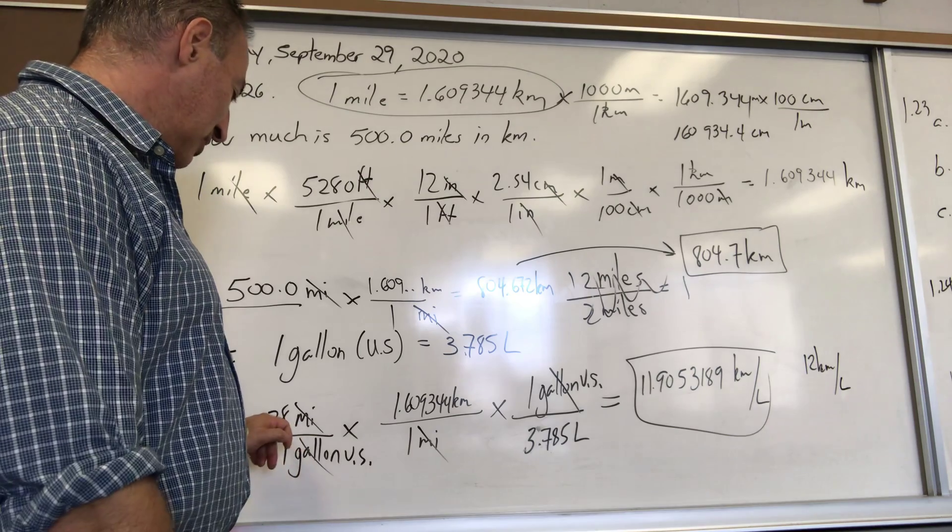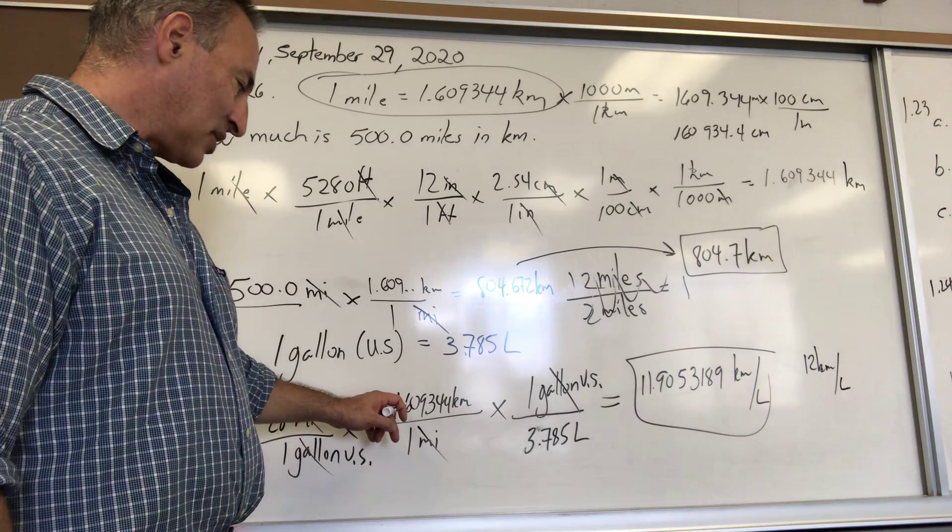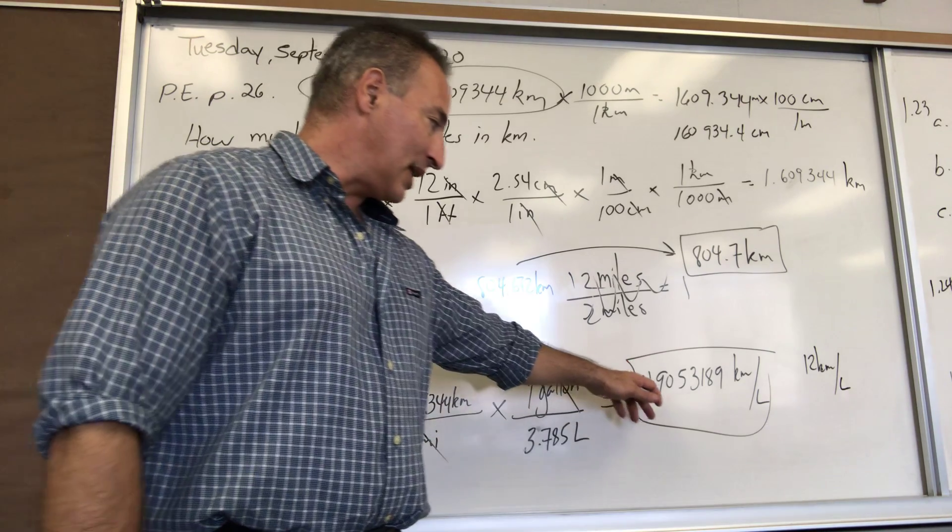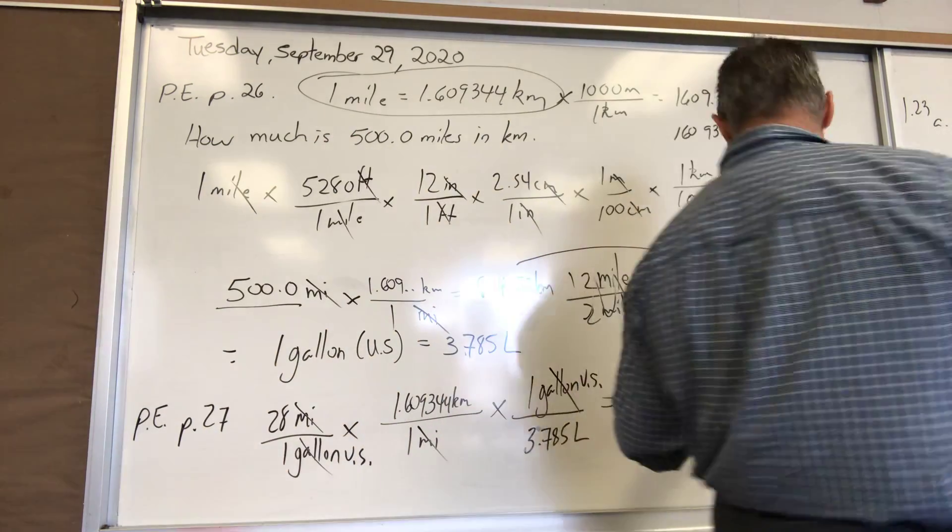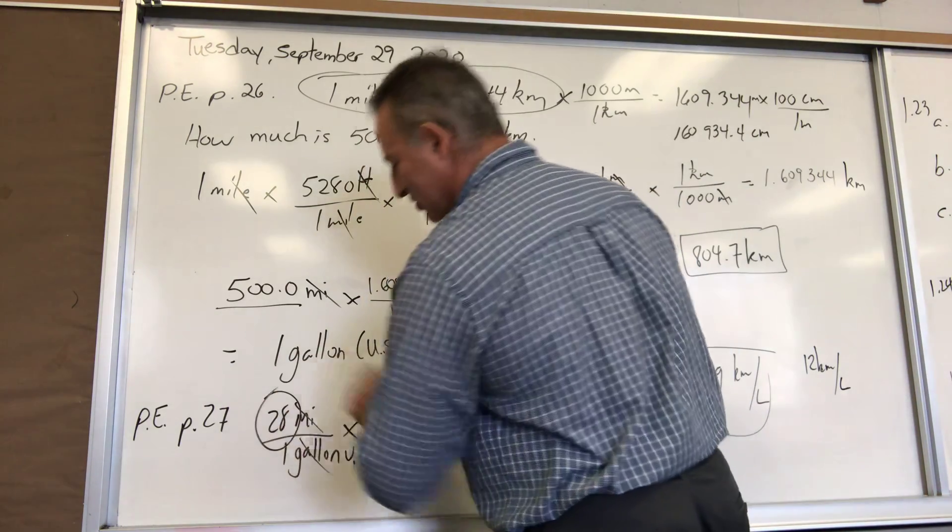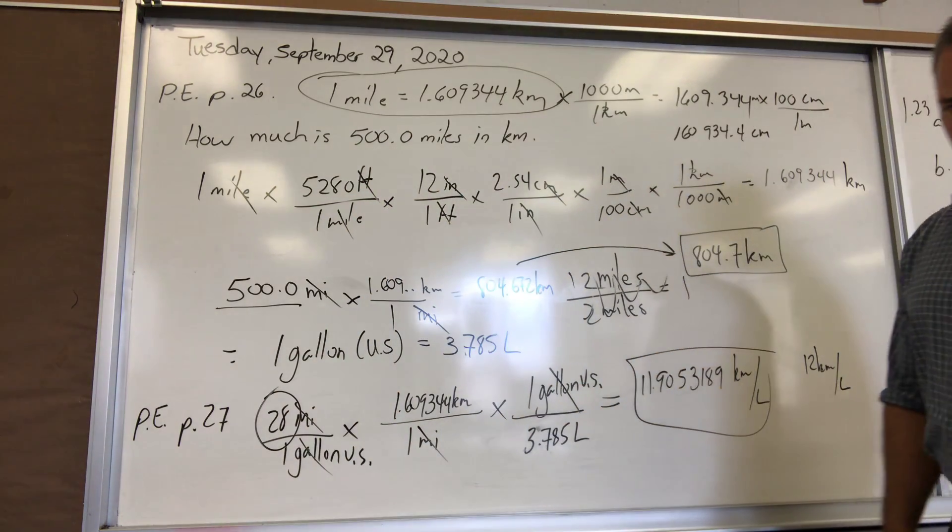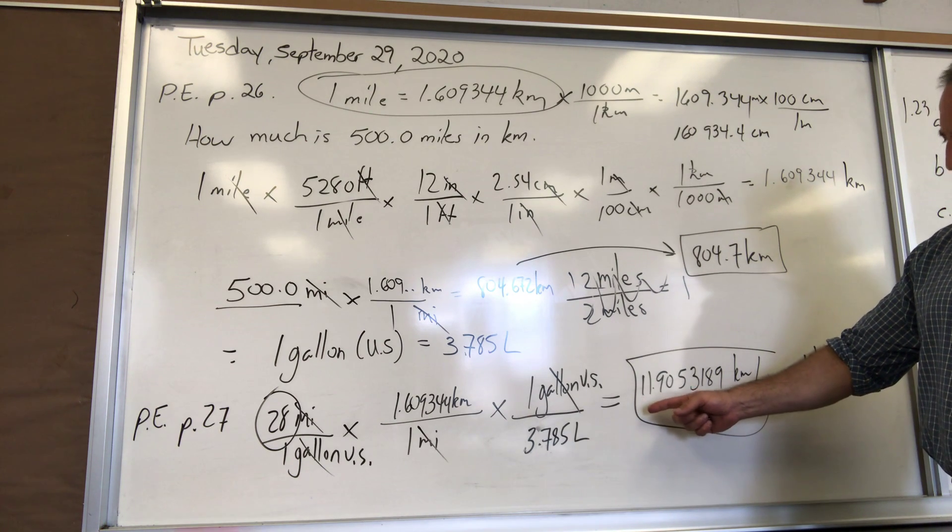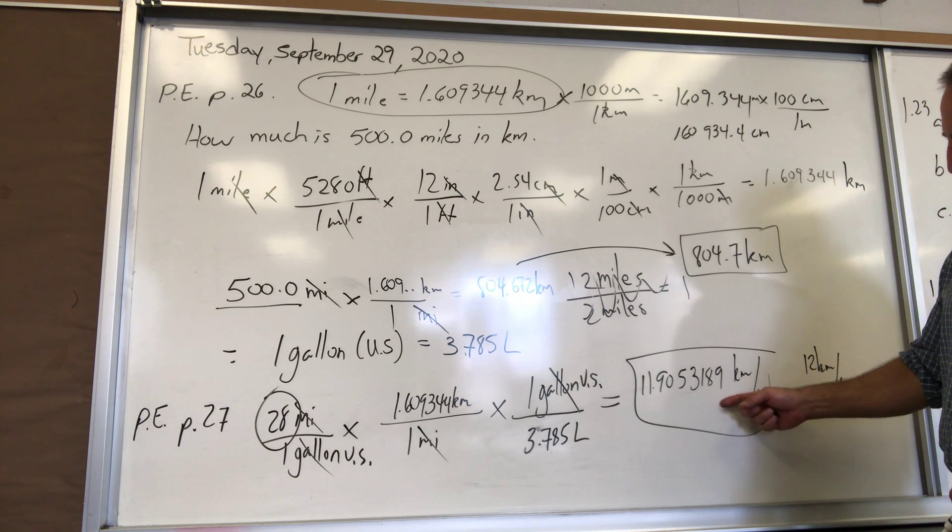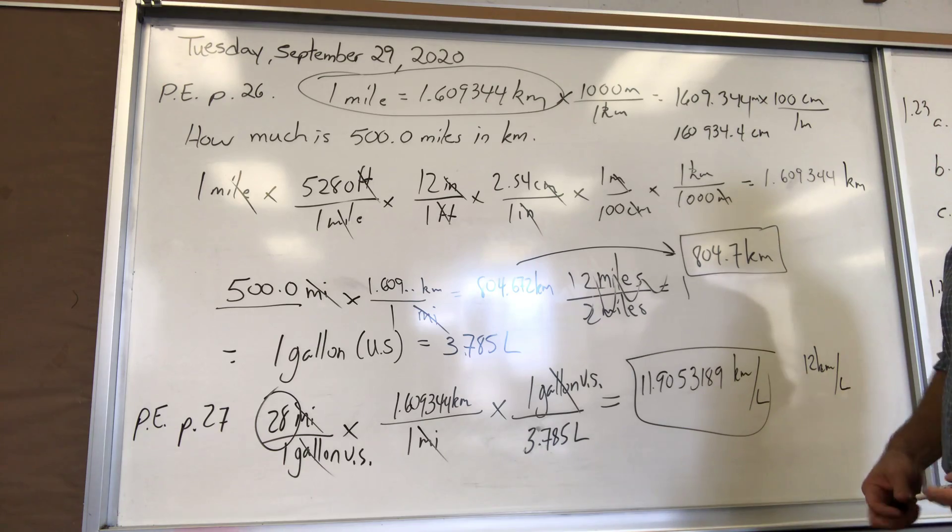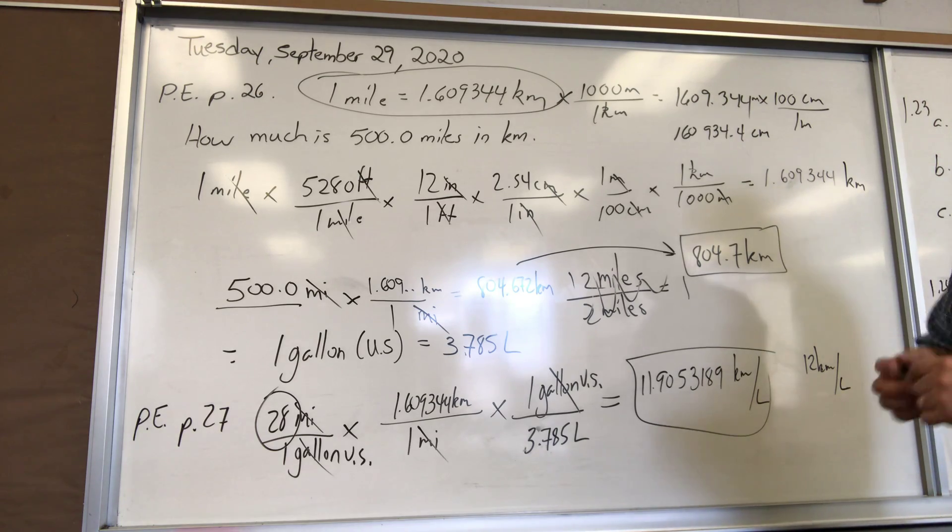I put gallons on top because here gallons is on the bottom; it allows me to cancel gallons. Now I do the math on the calculator. So it's 28 times 1.609344 divided by 3.785. What you get is this in your calculator readout. But the original number only had two figures in it, so it really makes no sense to report your answer to more than two significant figures. So 11.9053189 rounds up to 12, and that's the answer you see in the book as well—12 kilometers per liter.